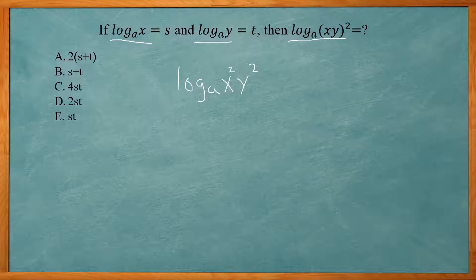Now when you have two things multiplied together inside there, we can change it to two logarithms where you have log base a of x squared plus log base a of y squared and I can move the two that's in the exponent out front and make it two log base a of x plus two log base a of y.